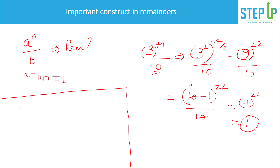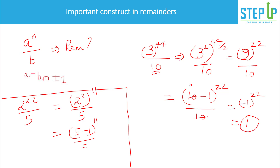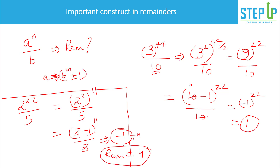Another example: 2^22 divided by 5. Write 2^22 as (2^2)^11 = 4^11. Then write 4 as (5 − 1), giving (5 − 1)^11 divided by 5. All terms with factor 5 vanish, leaving (−1)^11 = −1. Since we don't use negative remainders in exams, add the divisor: −1 + 5 = 4. So the remainder is 4.